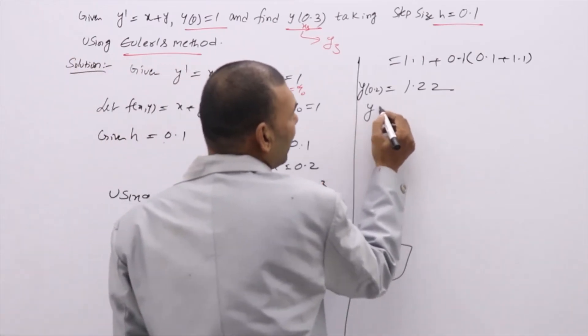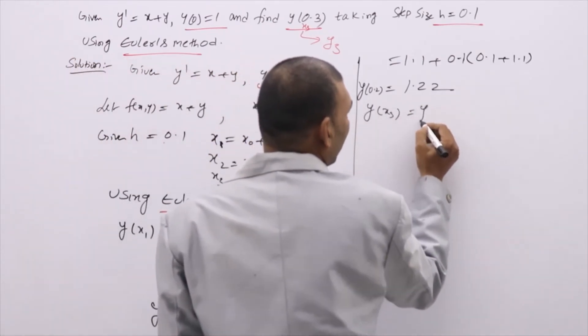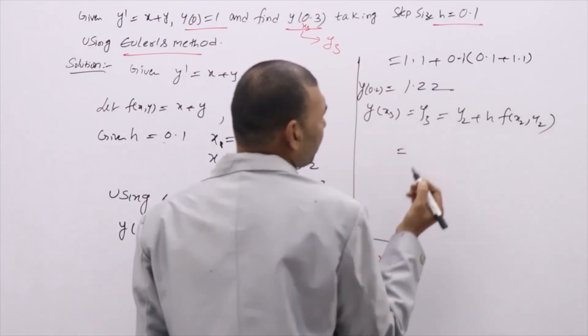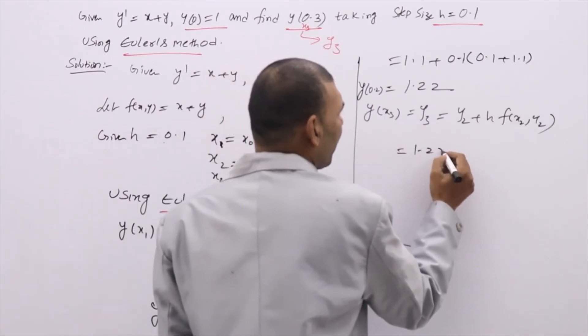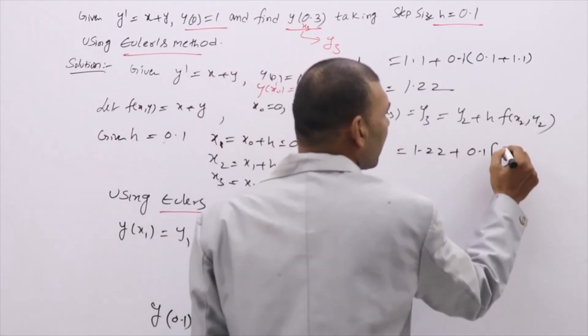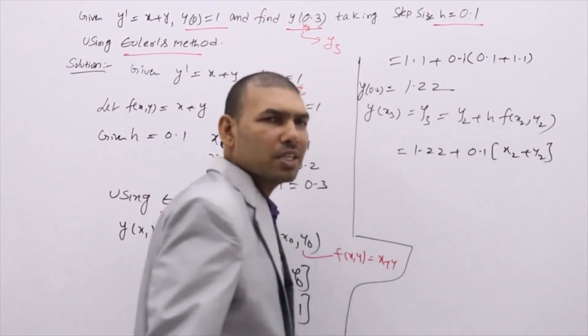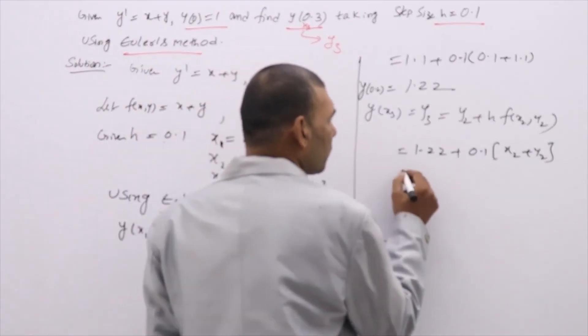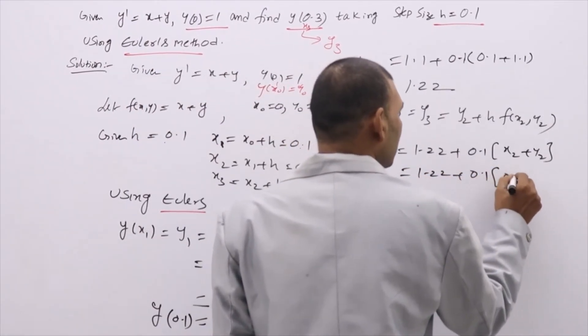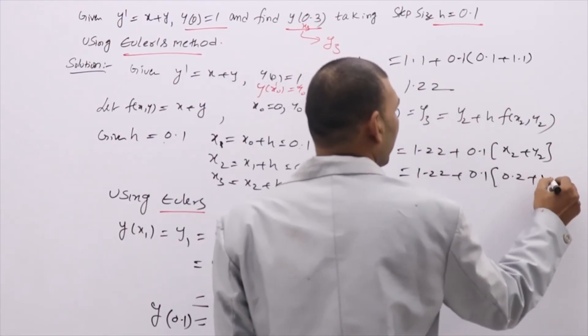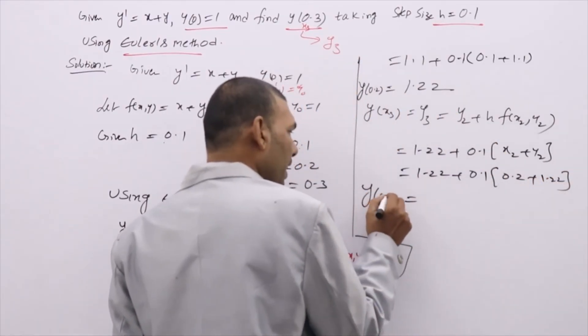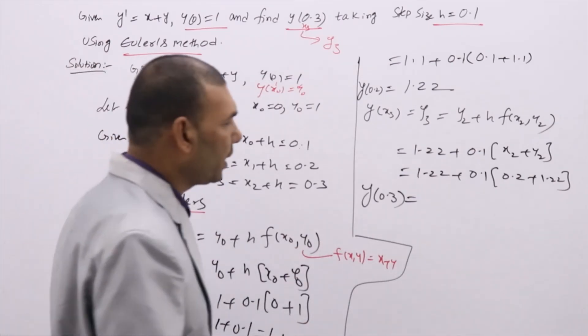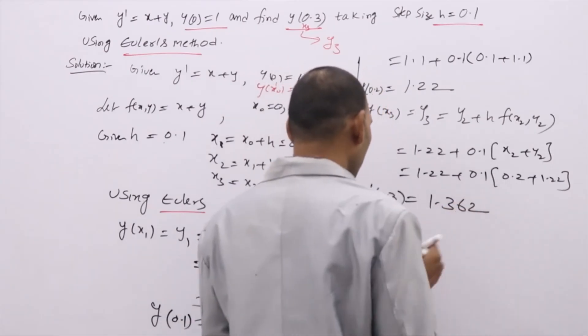Next we need to find y(x₃) that is y₃ which has formula y₂ + h·f(x₂, y₂). So y₂ value just now we evaluated: 1.22, h is 0.1, f(x₂, y₂) means x₂ + y₂ because f(x,y) is x + y. Now substitute those values: x₂ is 0.2, y₂ just now we evaluated. Now if you calculate using your calculator you will get the required y(0.3) as 1.362.